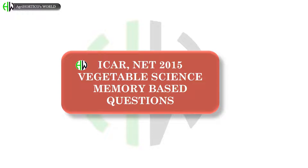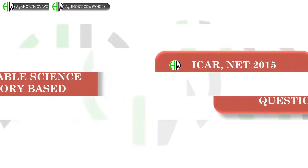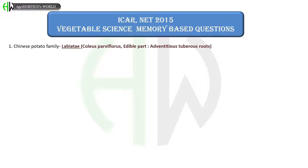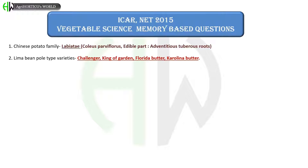These are the NET 2015 questions. Let's see one by one. Chinese potato family is Labiettae, Coleus pavifloris, and its edible part is adventitious tuberous roots. Lima bean pole type varieties are Challenger, King of Garden, Florida Butter, and Carolina Butter.